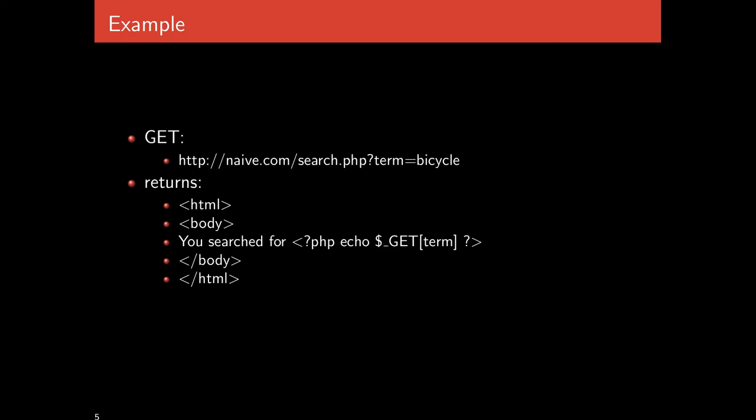For example, suppose we go to naive.com and use their search program, passing the key-value pair term=bicycle. When you do an HTTP GET for that URL, the server returns an HTML page. The server-side code is a PHP program that simply echoes the term — it looks in the dictionary of GET arguments, finds the one called 'term', and puts it in the page. So the PHP block gets replaced with 'bicycle', and you're shown 'you searched for bicycle.' If you put something else as the term, that something else appears in lieu of bicycle. This is the basis of reflection — user-provided input is echoed back into the HTML page.